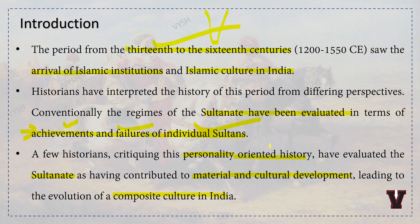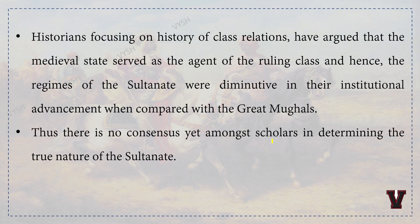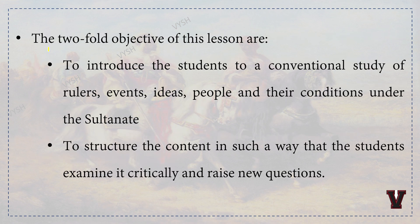Each sultan had their own way of ruling. There were many clashes between them — a lot of fighting, even between brothers. Historians focusing on class relations note that the medieval state served as the agent of the ruling class. Hence these regimes of the Sultanate were diminutive in their institutional advancement when compared with the great Mughals. Thus there is no consensus yet amongst scholars in determining the true nature of the Sultanate.